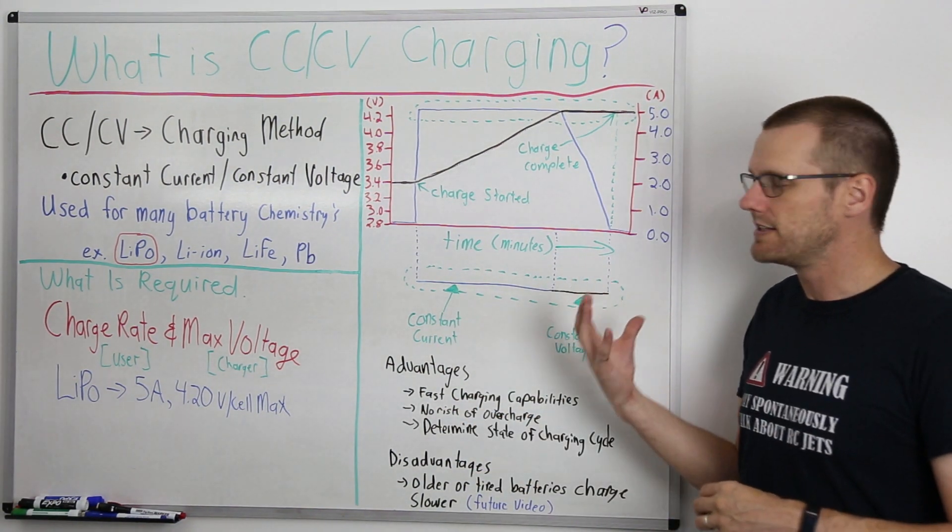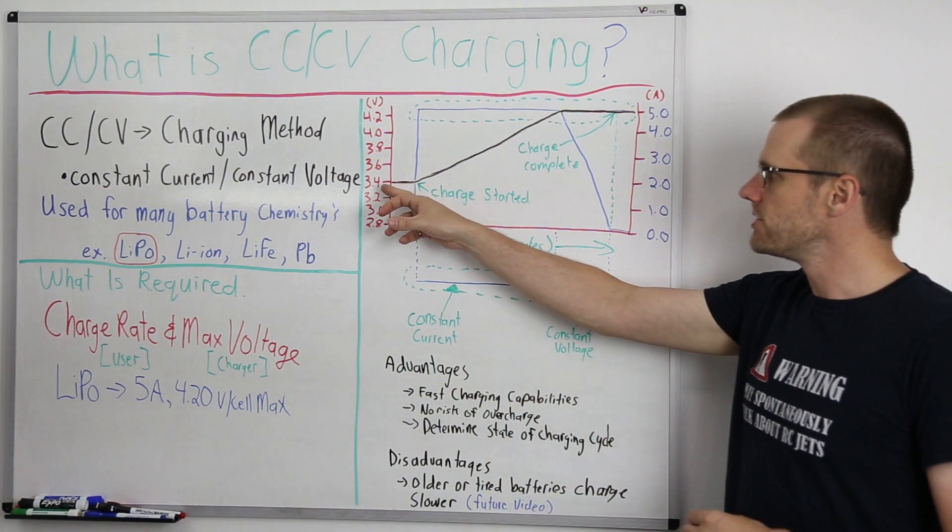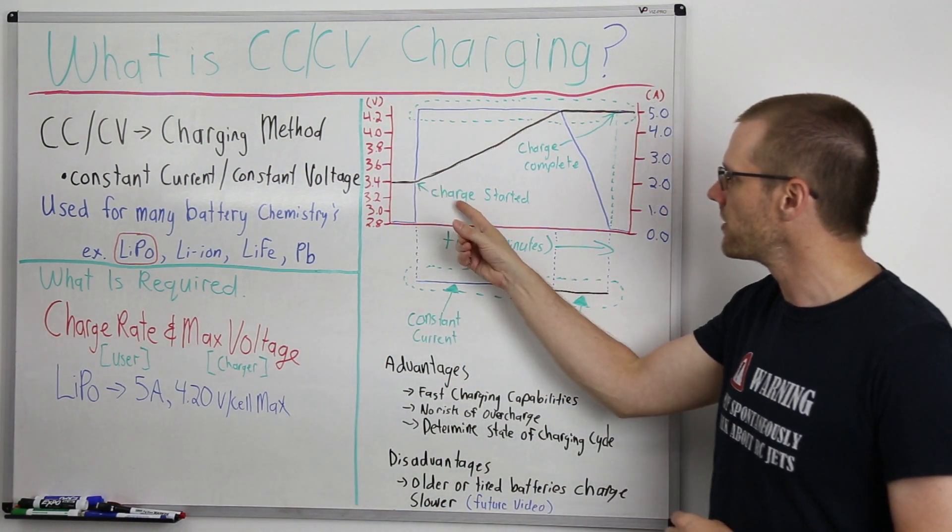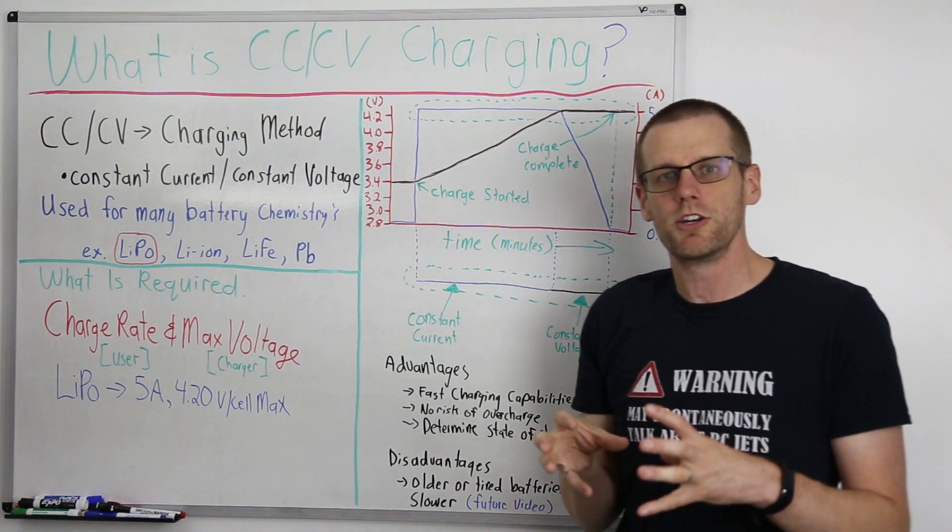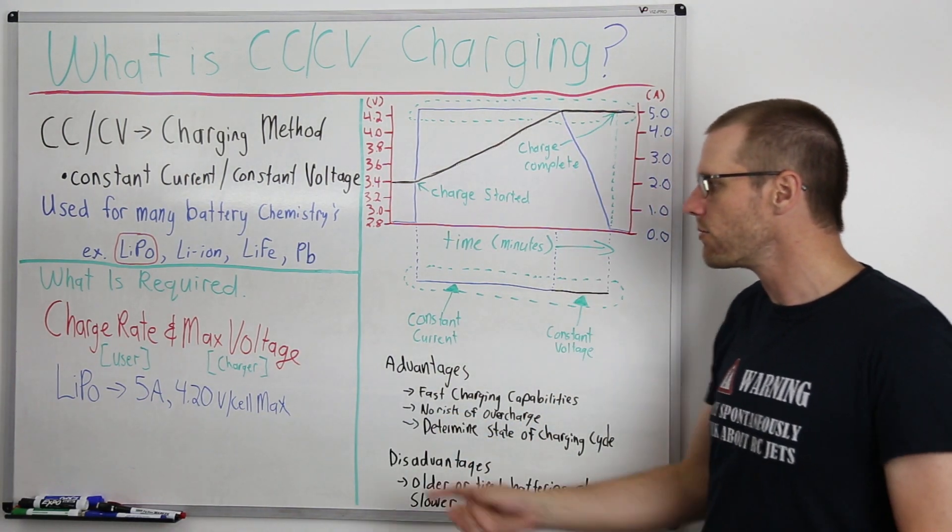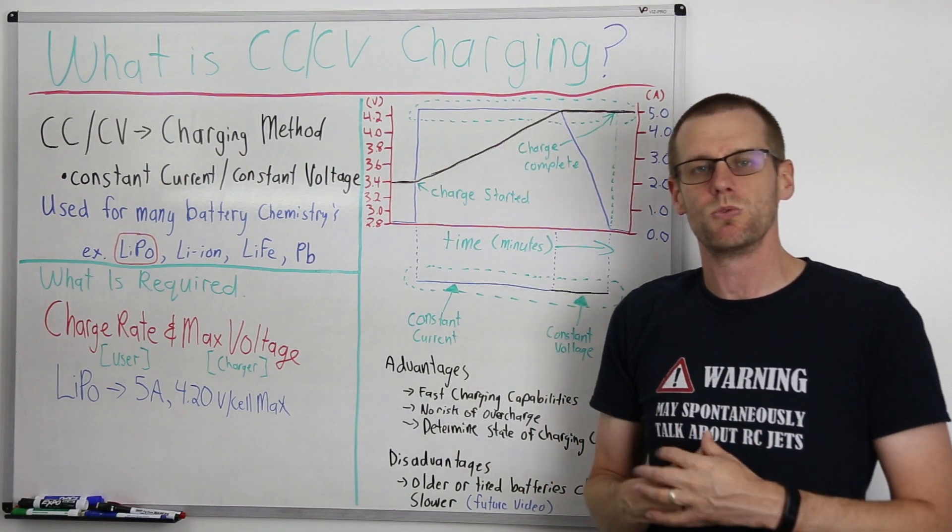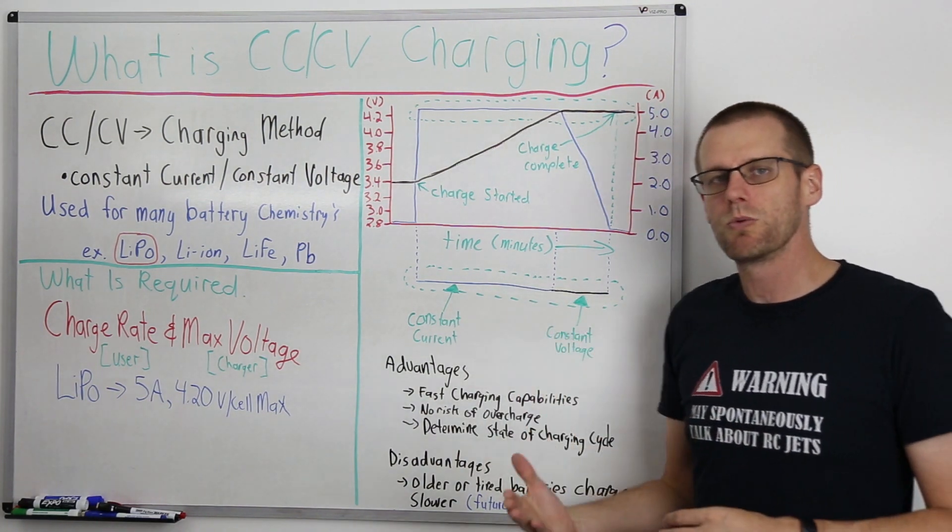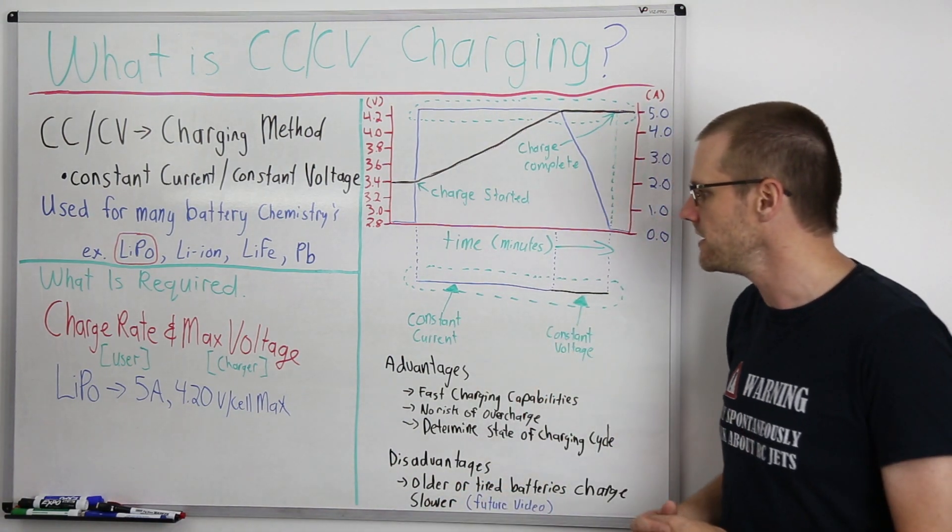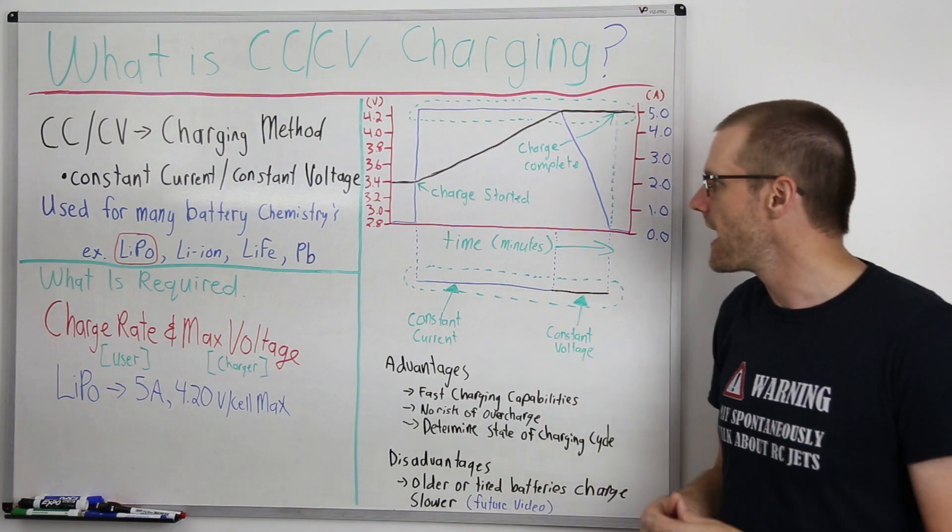So let's take a look now at exactly what our graph looks like. We have that voltage sitting at 3.4 volts and then you can see we get to this point where the charge is started. This is you on your charger. You're starting to initiate that charge. What you've done already is input all the values and your charger knows how fast you want to charge that pack. Here we're charging a 5,000 milliamp hour battery pack at 1C. This is going to be 5 amps and we're going to start to charge that pack.